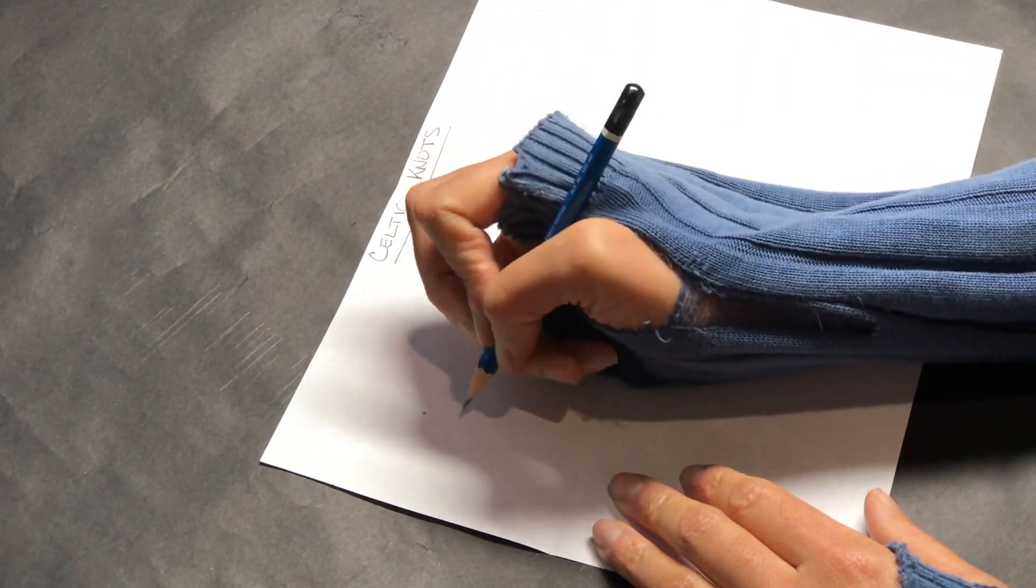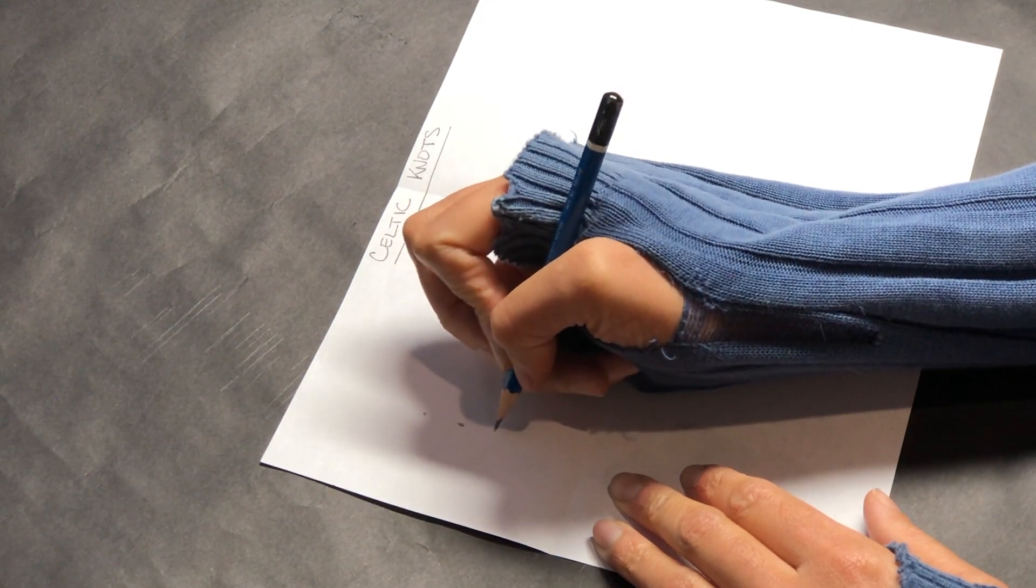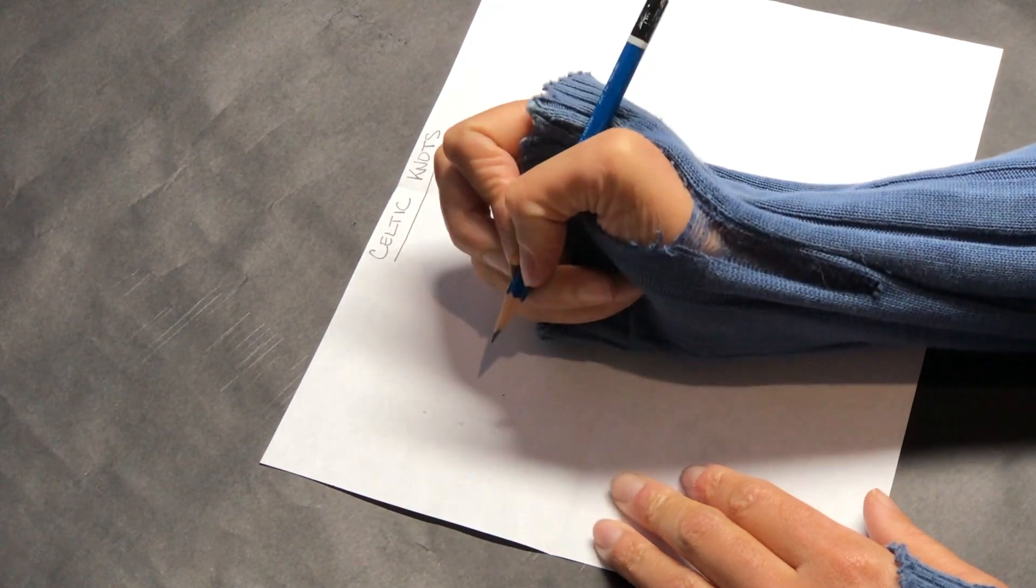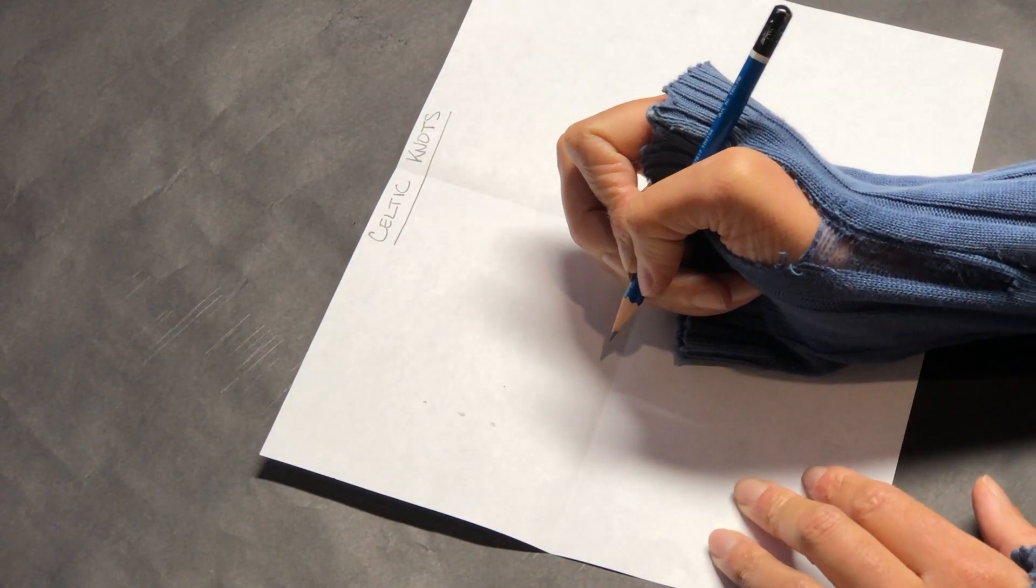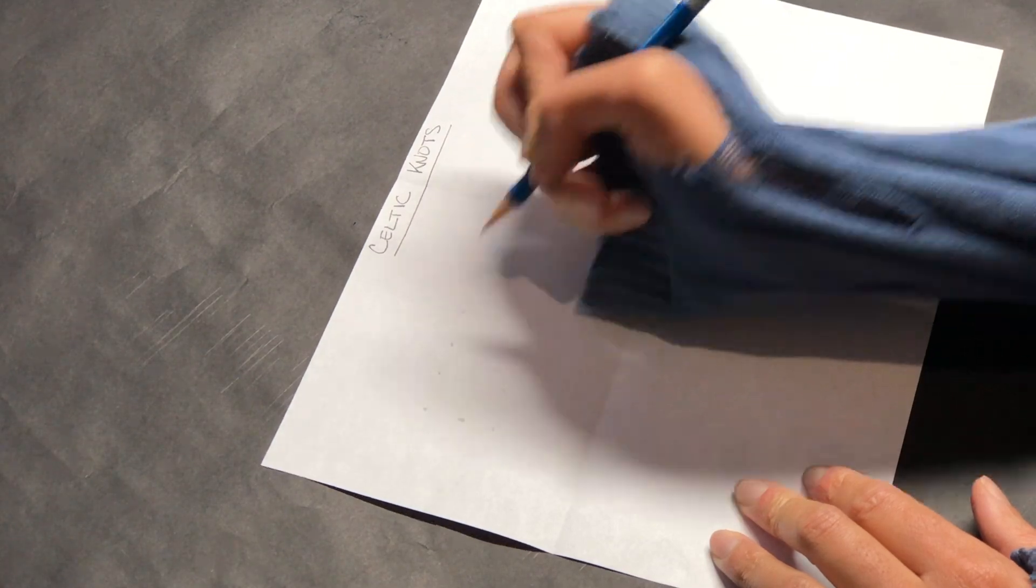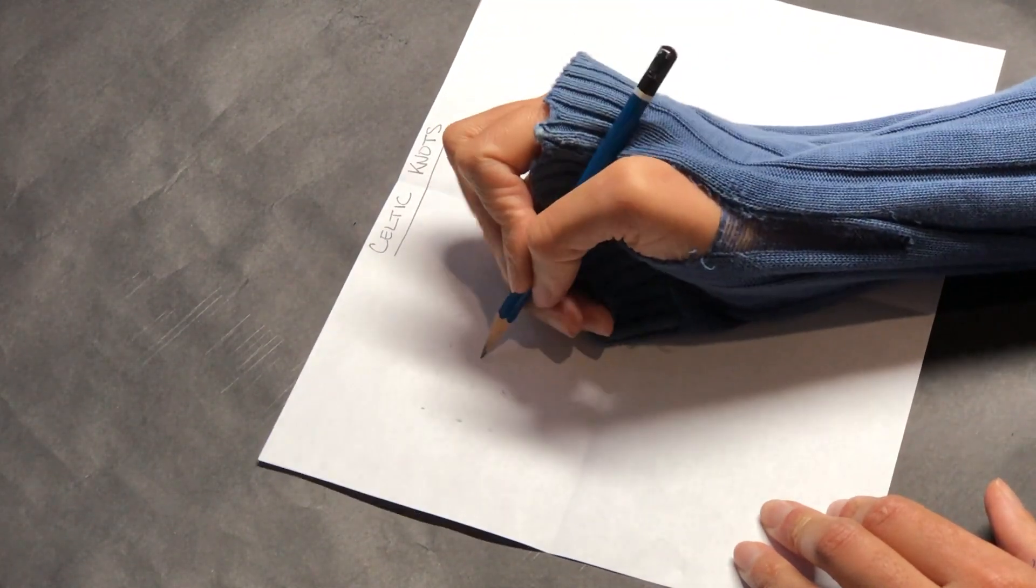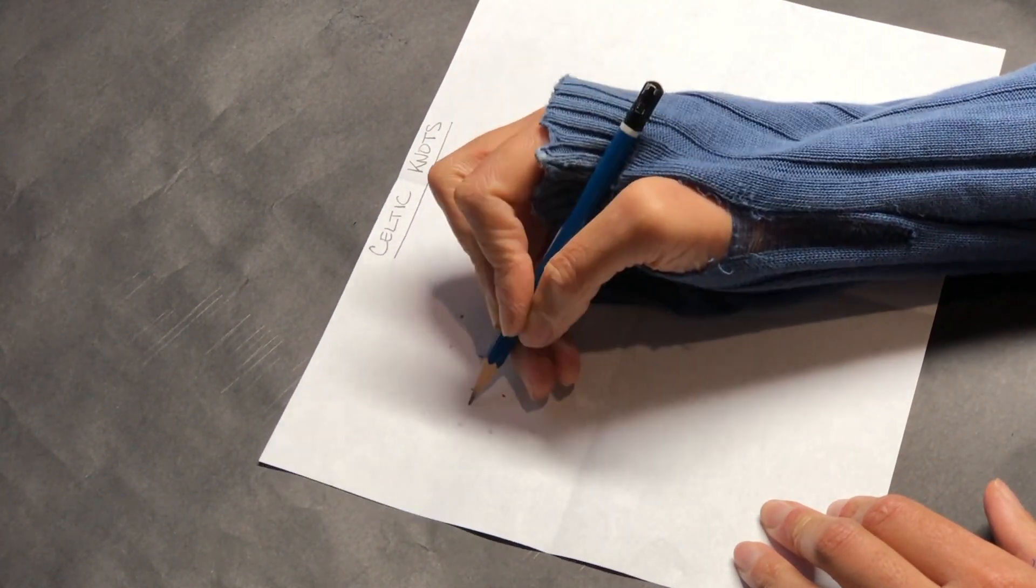We will start out by making a three dot by four dot grid. That's three rows and four columns. Ghost the line so that you can make sure your dots are aligned. And again, you will need three rows and four columns. Do this now.